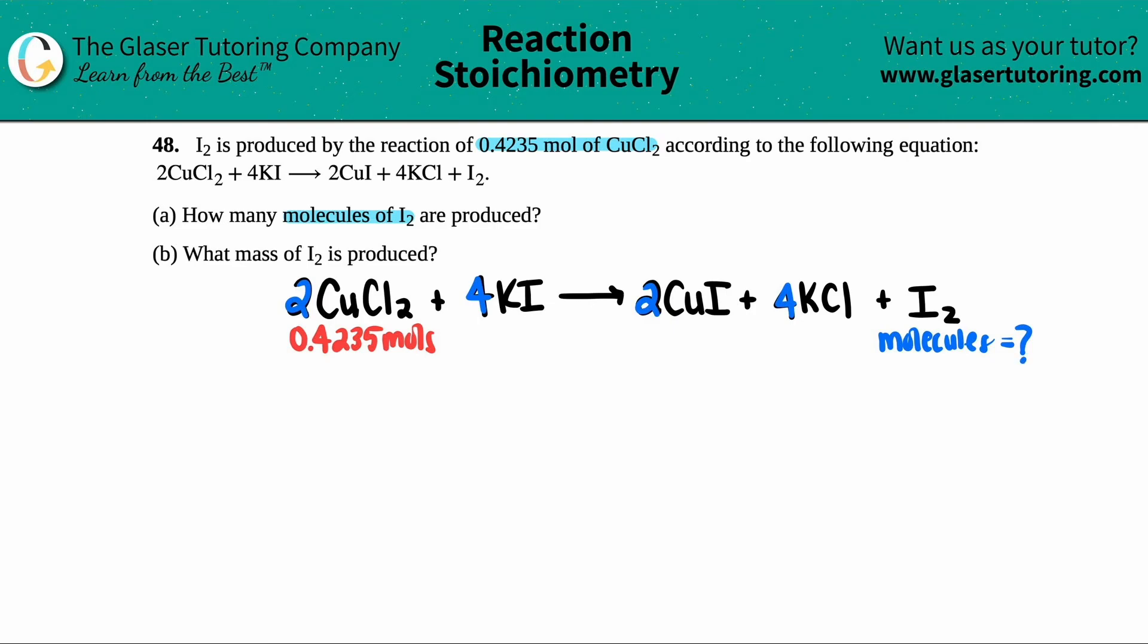Now, when you notice that you have a balanced equation, and when you have information on one compound, so I have this amount of moles of CuCl₂, and they're asking me for a quantity of another compound, in this case, it's a molecule, we have to do stoichiometry. That basically just means that we have to convert from this information to this information using a balanced equation.